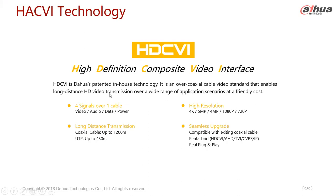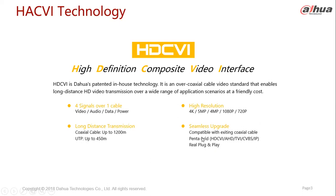There are different versions of HDCVI technology. The advantage of HDCVI is that you can do composite video — unlike the old times where you would only do video over coaxial, now you can do video, audio, data, and alarm information via HDCVI coaxial cable. Supported resolutions are 4K, 5MP, 4MP, 2MP, and 1MP. Transmission distance is up to 1 kilometer for coaxial and up to 450 meters for UTP. You can also do upgrades via coaxial cable.